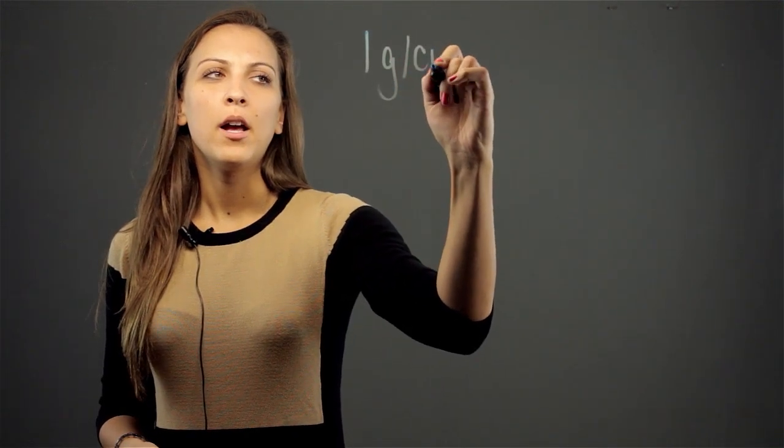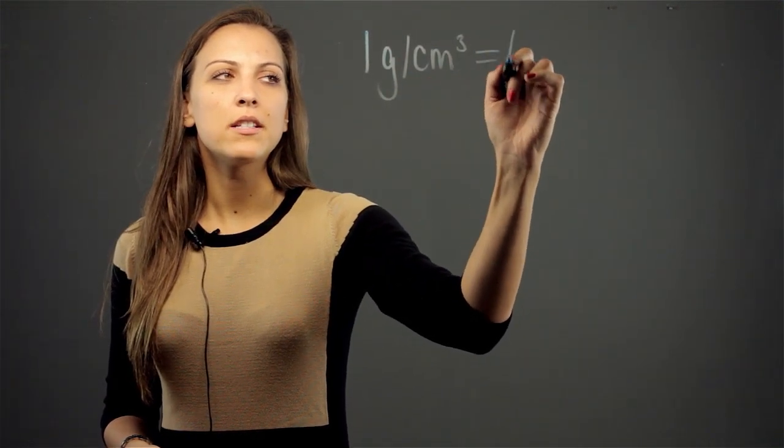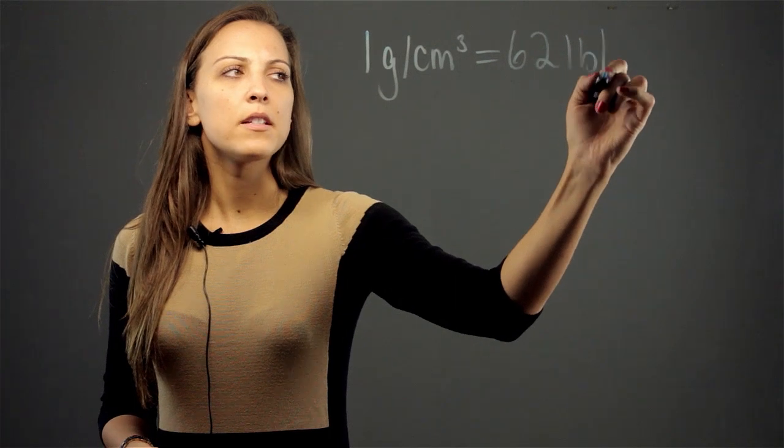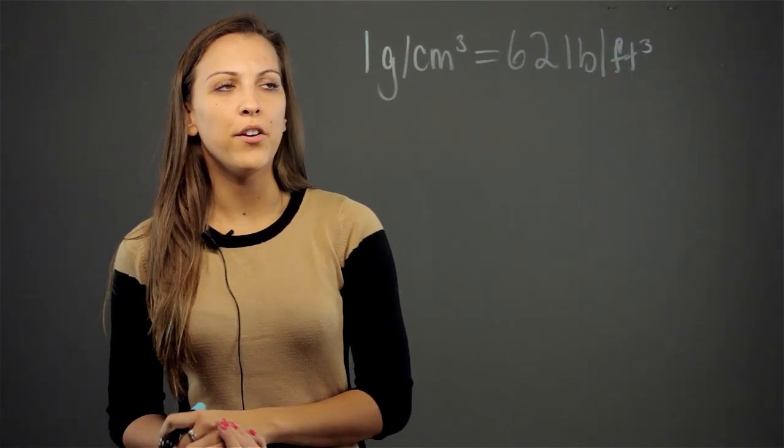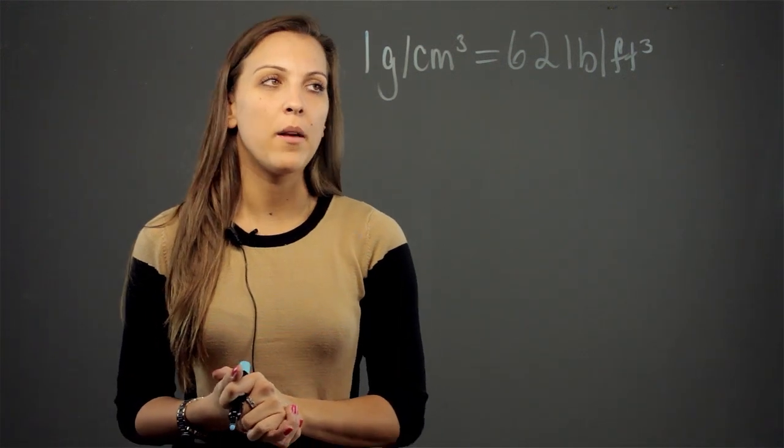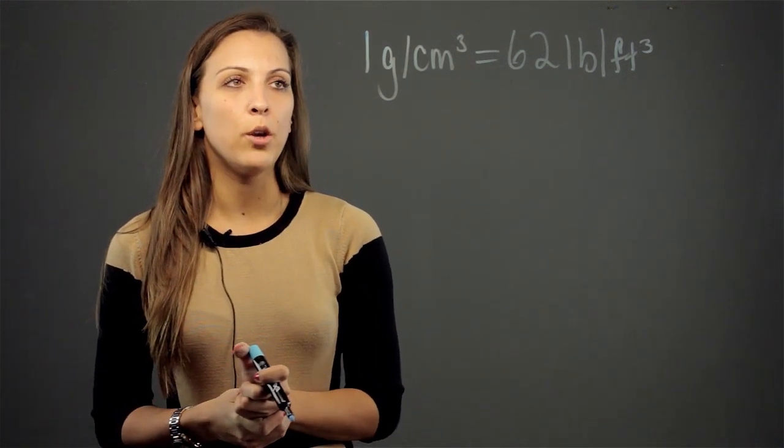One gram per cubic centimeter is equivalent to 62 pounds per cubic foot. This is the conversion that you need, and from here you can find out any amount of grams and their equivalents in pounds per cubic foot.